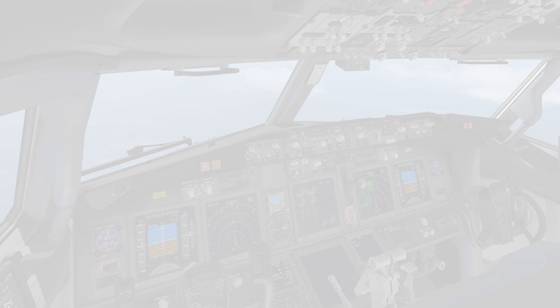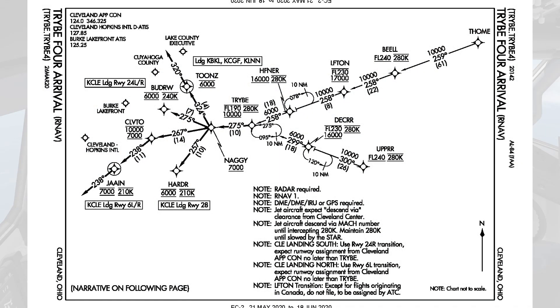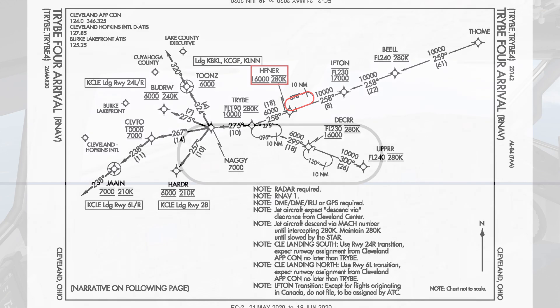So what does a holding pattern look like? We are on the TRYBE4 arrival into Cleveland Hopkins International, and it just so happens that there is a holding pattern already set for us at Hefner. Let's break it down. In a holding pattern you have the following elements.